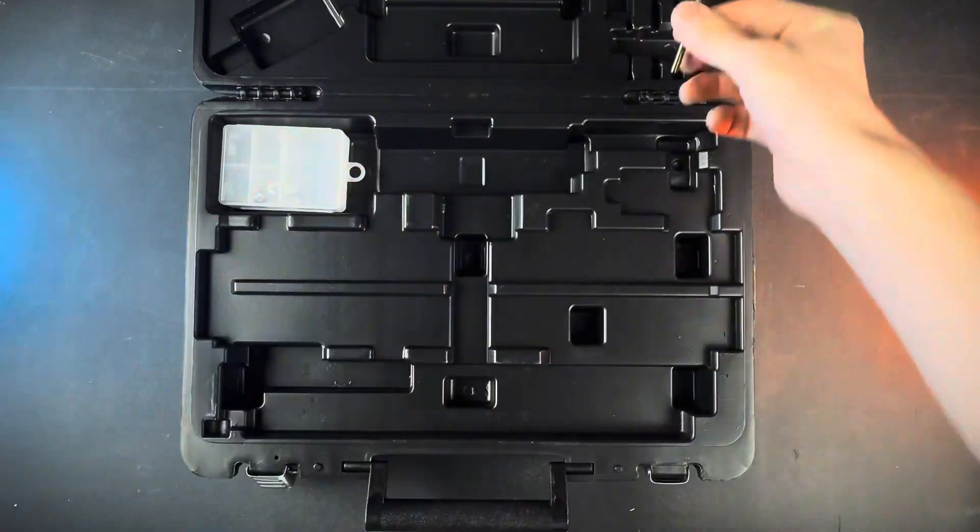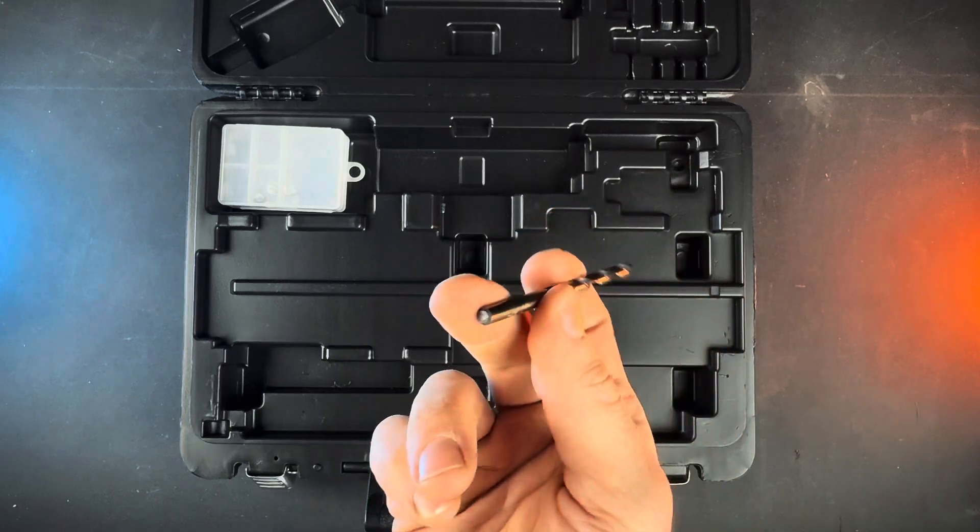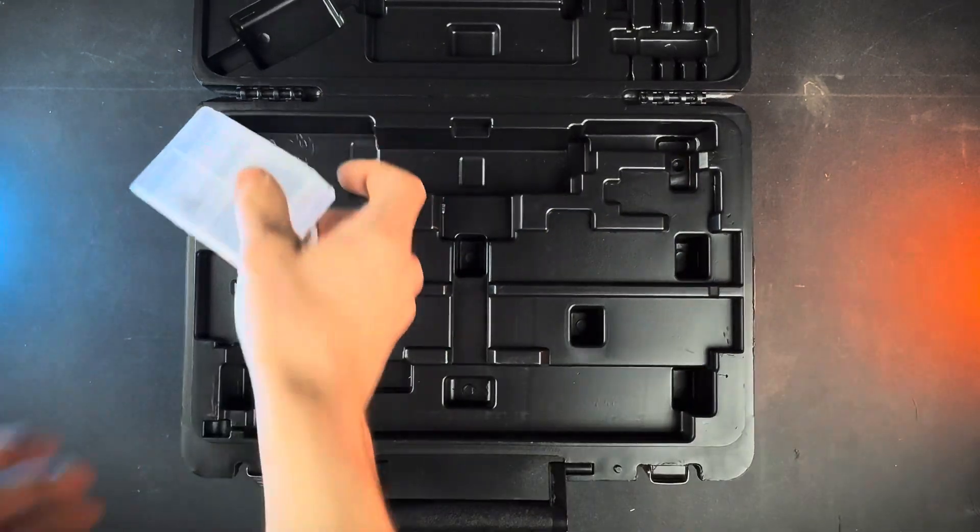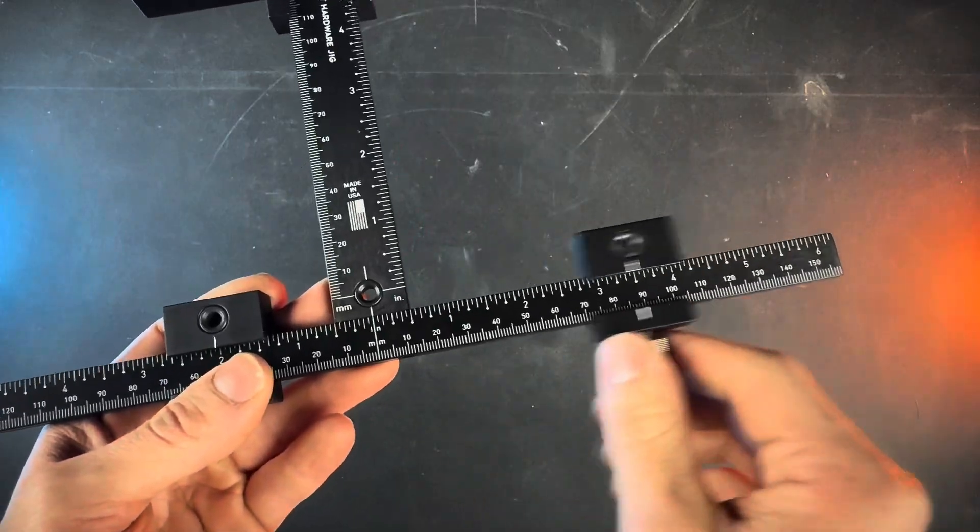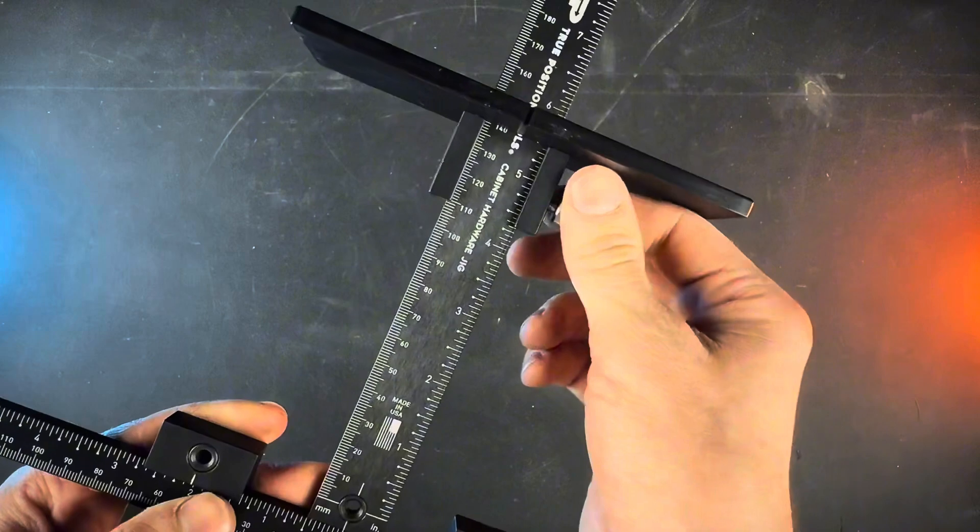You also get a 5 millimeter drill bit, which is what you're going to need to drill all the holes, and then this little case here with some feet for the back of your jig and some magnets. It has a whole bunch of different sliders on it to help you perfectly line up all your different kinds of cabinet hardware.